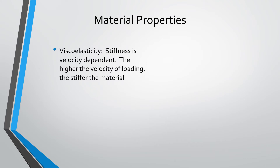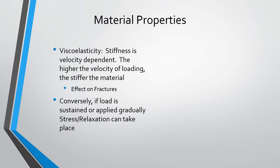Many structures of the body are viscoelastic, meaning stiffness depends upon the velocity of loading — the faster a structure is loaded, the stiffer it is, and the slower it is loaded, the softer it is. Bones are among viscoelastic materials. Fractures caused by gunshot injury occur at very high velocity, causing the bone to become very stiff, store up a large amount of energy, and then shatter — resulting in widely comminuted fractures.